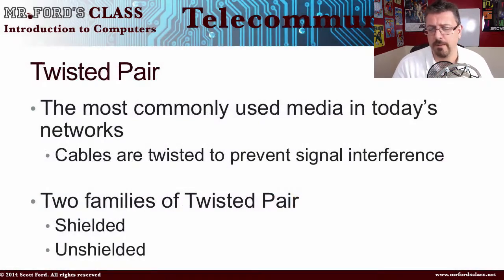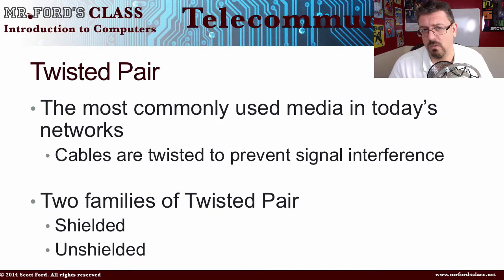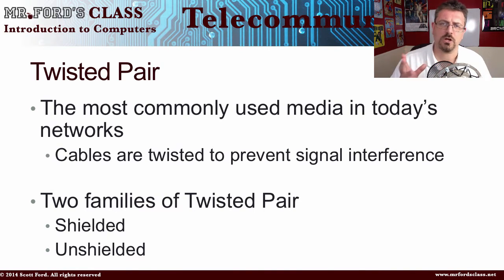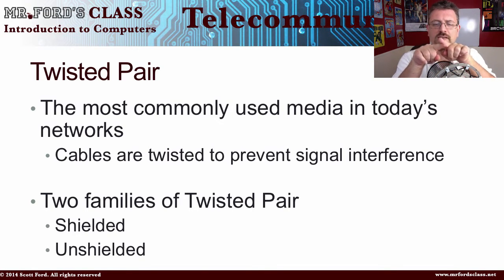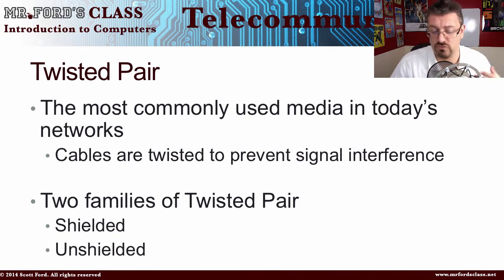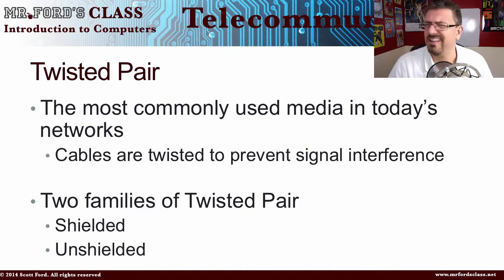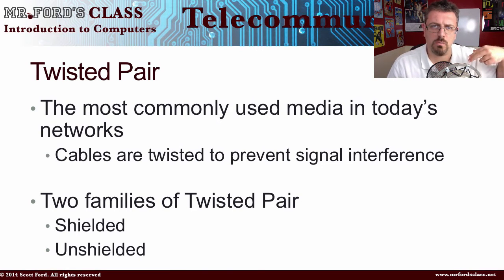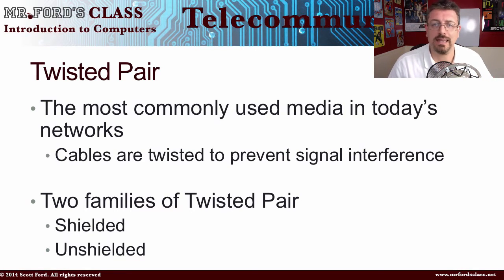Twisted pair — unshielded twisted pair (UTP) or shielded twisted pair (STP) — is your most common method right now in networks. This is what you'll most likely find plugged into the back of your computer at work. It's called twisted pair because inside the plastic sheath you find copper wires twisted around each other — that twisting prevents signal loss. Shielded twisted pair is more expensive and has an additional metal wrapping around the cabling, while unshielded twisted pair lacks that extra metal wrapping and is much cheaper — so unshielded is used most frequently in networking environments.